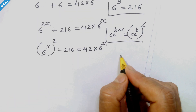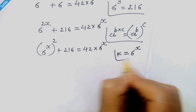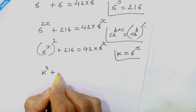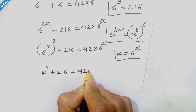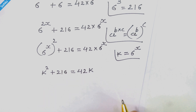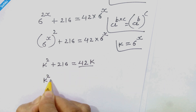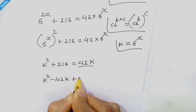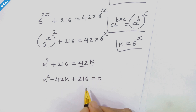For convenience, we will take k in place of 6 raised to x. So here we have k squared plus 216 is equal to 42 times k. Moving 42k to the left-hand side, we get k squared minus 42k plus 216 is equal to 0.